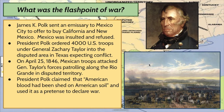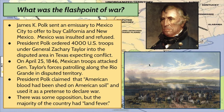President Polk claimed that American blood had been shed on American soil — that's an exact quote — and used it as a pretense to declare war. Obviously, this was disputed territory; the United States was claiming it as American soil while Mexico was claiming it as Mexican soil. This was propaganda used to justify the initiation of the war, but it was also successful. There were some Americans who opposed this war, one of the most famous being Abraham Lincoln and Mark Twain, but the majority of the country had land fever and believed in Manifest Destiny.